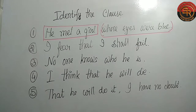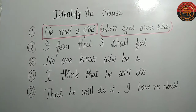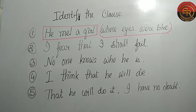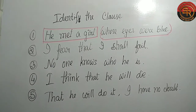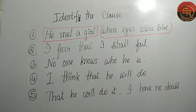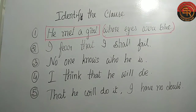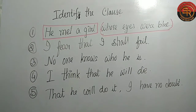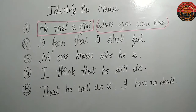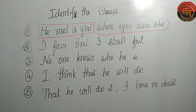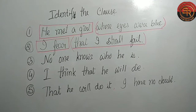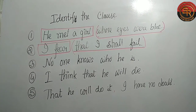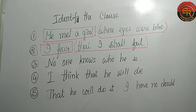Now let's look at the second question: 'I fear that I shall fail.' As we have discussed, the principal clause makes complete sense, while the subordinate clause depends on the principal clause. So in 'I fear that I shall fail,' can you tell me which is the principal clause and which is the subordinate clause? Here I have pointed out both parts.